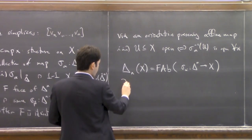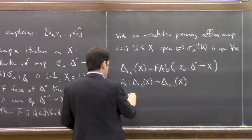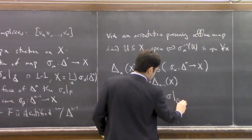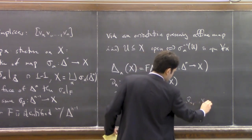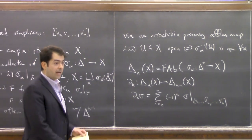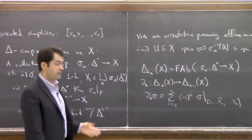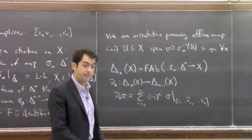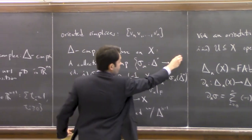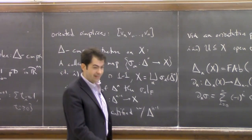We want the open sets in X to correspond precisely to the ones that pull back to open sets along all of these maps. That guarantees we can reconstruct X from the Delta complex structure together with its topology. Given a Delta complex structure, we defined some abelian groups — a free abelian group with generators given by all of the sigma_alpha's in the Delta complex structure — and we defined boundary maps. This is the chain complex corresponding to the Delta complex structure.